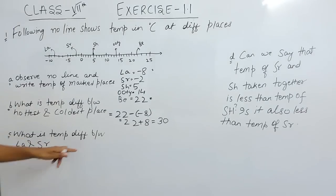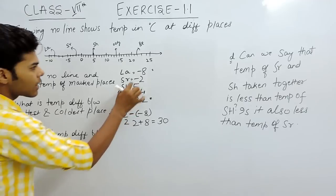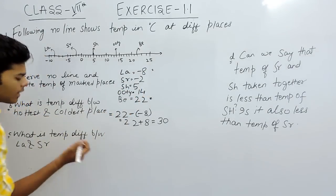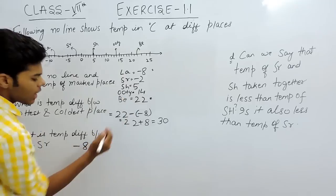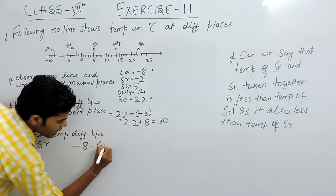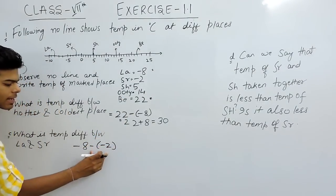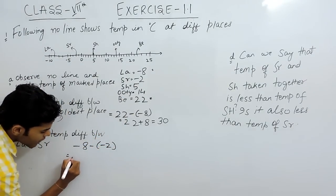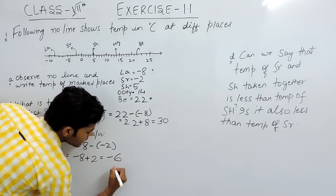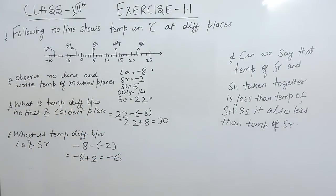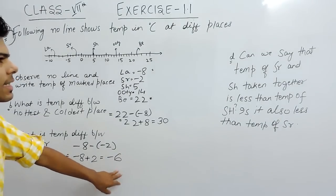Now, what is the temperature difference between LA and SR? So, first of all, we will write LA. That will be minus 8 and then SR minus minus 2. So minus minus again becomes plus. So it will give us minus 8 plus 2. That will give us minus 6. So, the temperature difference between LA and SR is minus 6.